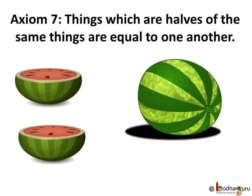And this is Euclid's another axiom which says things which are halves of the same things are equal to one another. That's all for now. We will continue with Euclid's postulates in the next lesson. Until then, bye-bye.